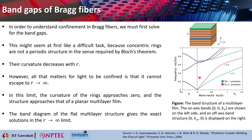If you study the band diagram for the flat multilayer structure which you have already done previously, this band diagram of the flat multilayer structure gives us an exact solution in the r → ∞ limit. This is basically a high-low-high-low different kind of multilayer film. This is a one-dimensional periodic crystal and here it is the band structure that plots the normalized frequency versus normalized wave vector.